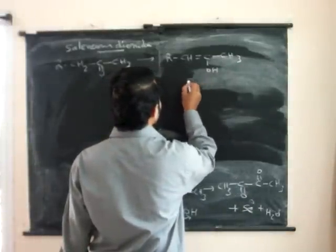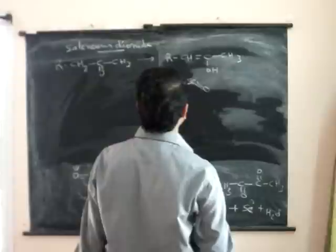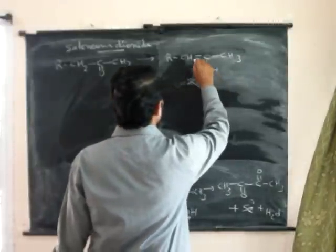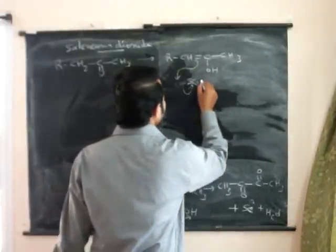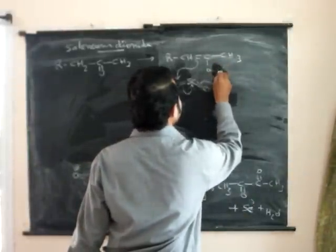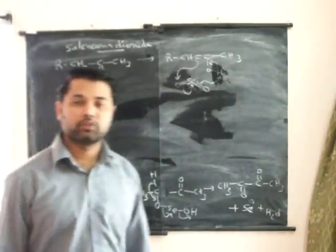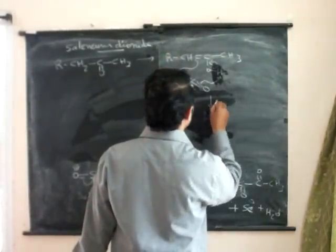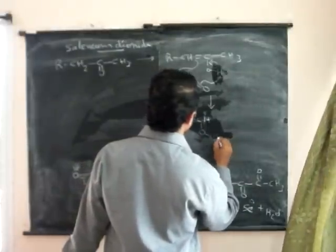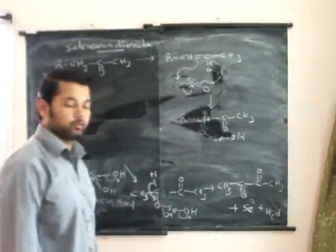Now SeO2COCH3 will come here. This will go here, and this will abstract this proton. That means this will abstract this proton, so that will shift towards the carbon. Now the product is CH2COCH3.